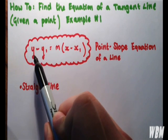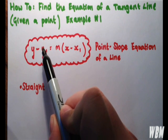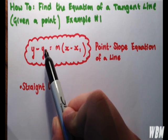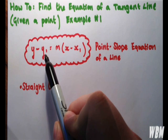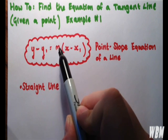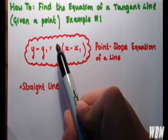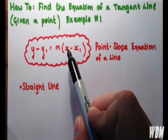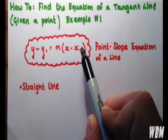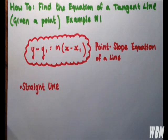where you have y, which is the variable y, minus y1, which is the y-coordinate you're given, equal to m, which is the gradient of the line at the point that you're given, times by x, the variable, minus x1, which is the x-coordinate.